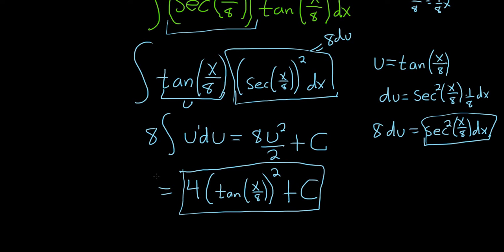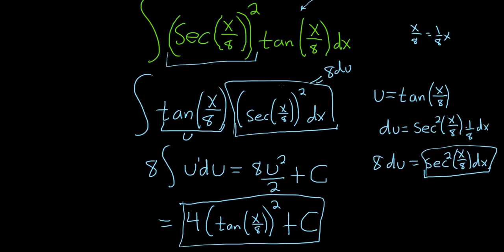Again, we had two choices in this problem. We had an even power of secant. And we had an odd power of tangent. So even secant, save a secant squared. We did that. And we chose to let u be equal to tangent. I hope this video has been helpful.